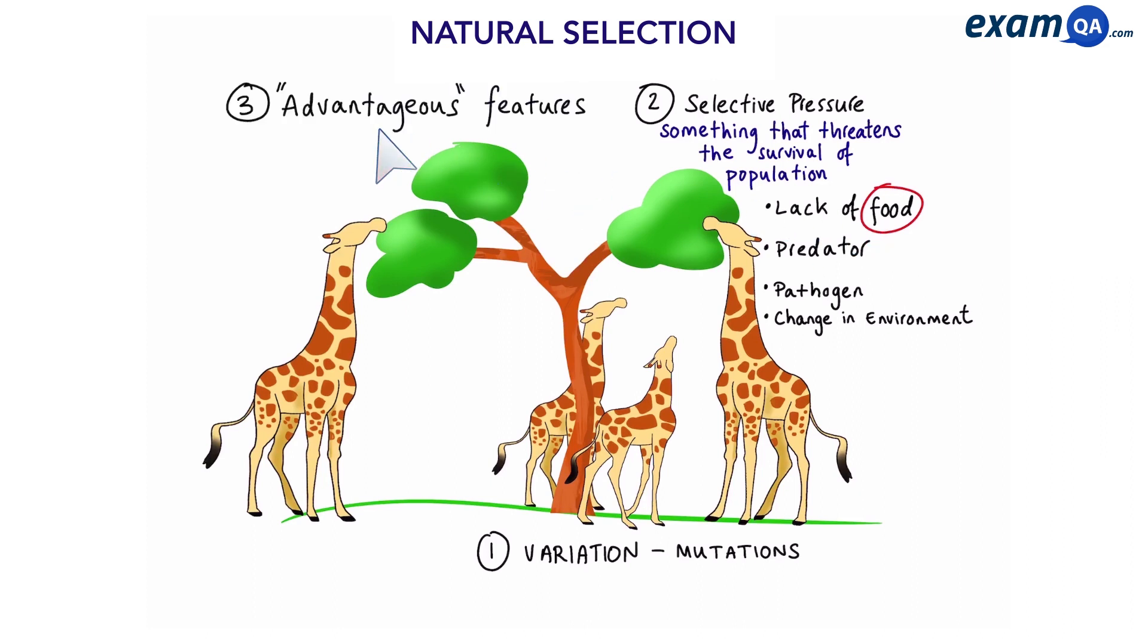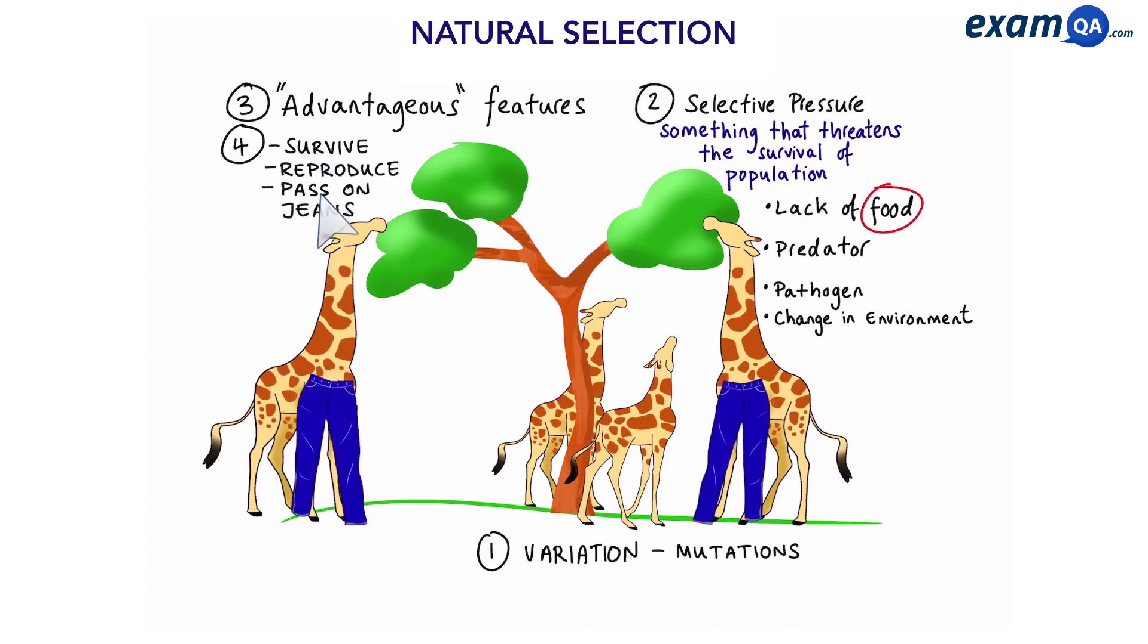Now some individuals have advantageous characteristics, for example some giraffes have long necks. These individuals will survive, reproduce and pass on their genes.